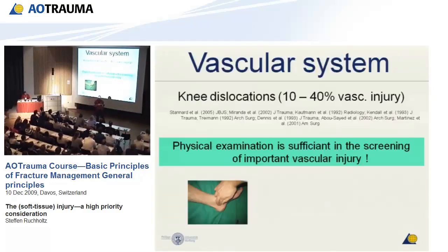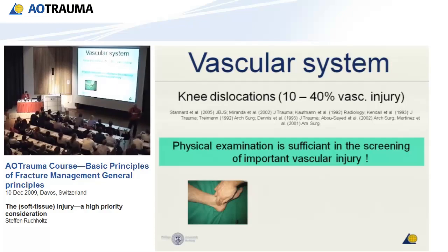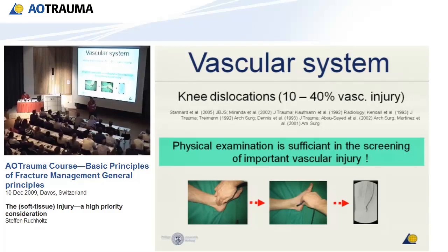For vascular assessment, physical examination seems sufficient for screening. Once a pulse is palpable, as shown in publications on knee dislocations, there was no relevant vascular injury after reduction. But if the patient is unstable or there is significant swelling, you need further diagnostics — Doppler first. If you still cannot find the pulse, go for an angiogram or MRI to diagnose vascular injury, and treat it very urgently once the patient is stabilized.